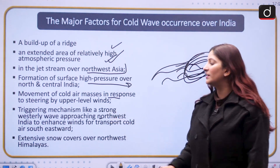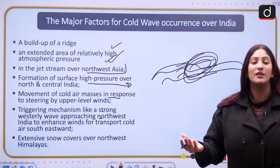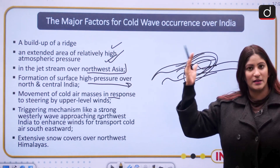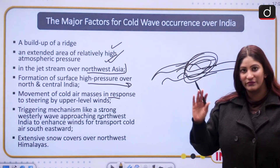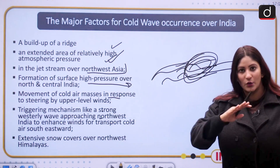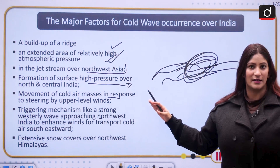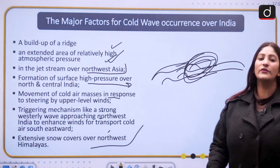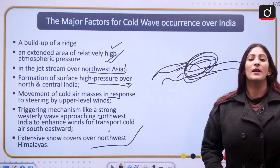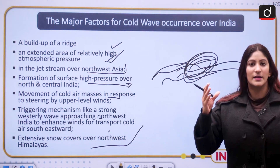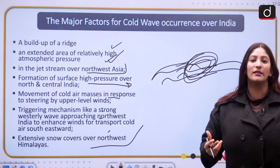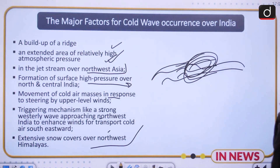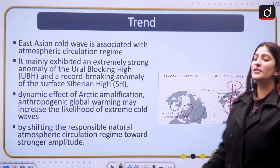Triggering mechanisms include strong westerly waves — the western disturbance which approaches from the Mediterranean region. When those come to India, the cold waves expand in northern India. Extensive snow cover over the northwest Himalayas also moves the winds in such a manner that the entire northern India comes under the grip of the cold wave.